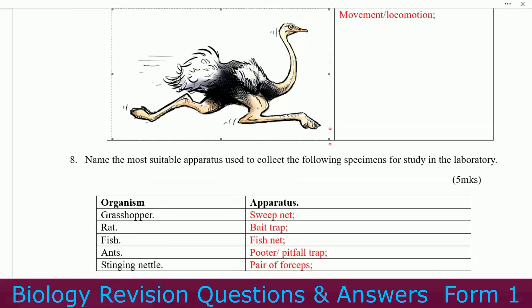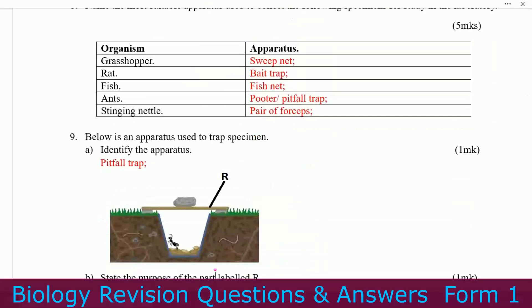Method: name the most suitable apparatus used to collect the following specimens for study in the laboratory. Grasshopper — you use a sweep net. Rat — belt trap. Fish — fish net. And pooter or pitfall trap. Stinging nettle — that one is a pair of forceps.